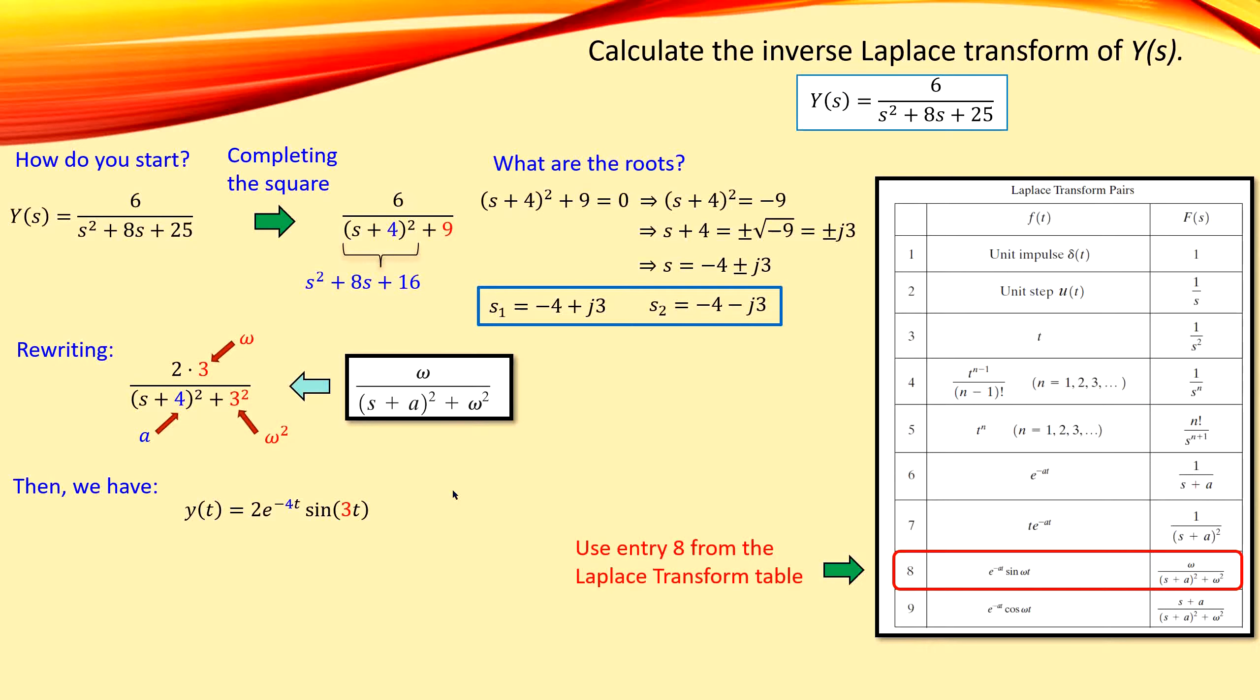What you see in this example is that this is just a pure second order system with only two complex poles. If you have, of course, an additional pole here, for example, at s is equal to minus 2, then you can, of course, use again partial fraction expansion.